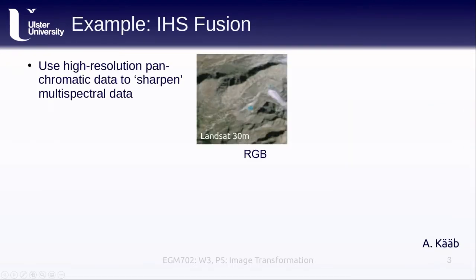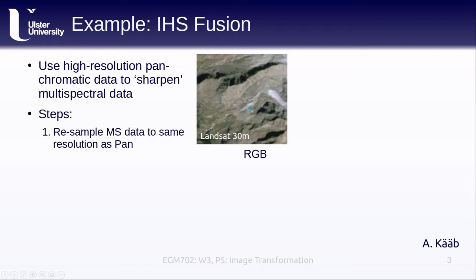One application that we can use for the IHS transformation is something called IHS fusion. With this, we use high-resolution panchromatic data to sharpen or increase the resolution of the multispectral data. The way that we proceed is as follows. First, we resample the multispectral data to have the same spatial resolution as the panchromatic data. This doesn't actually increase the spatial resolution; it just changes the pixel size.